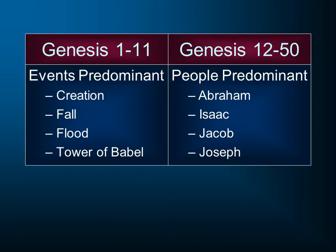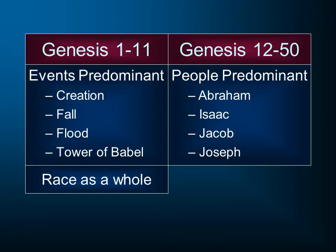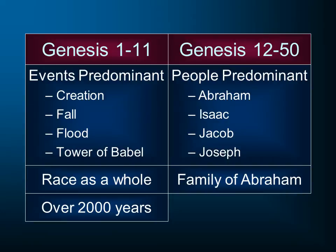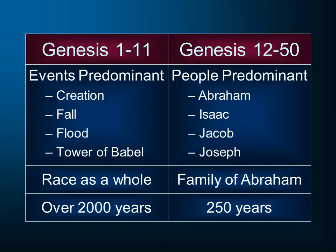The first section of Genesis, where those events are predominant, sees the human race as a whole. We do occasionally have individuals — Adam and Eve, Cain and Abel, Noah and his sons — but it looks at the entire human race. Then when we come to chapters 12 through 50, we look at just one family out of the entire human race: the family of Abraham. The first section gives us 2,000 years plus of history, whereas chapters 12 through 50 — the bigger section of the book — give us a much shorter period, around 250 years from the birth of Abraham to the death of Joseph, but with much greater attention to detail.